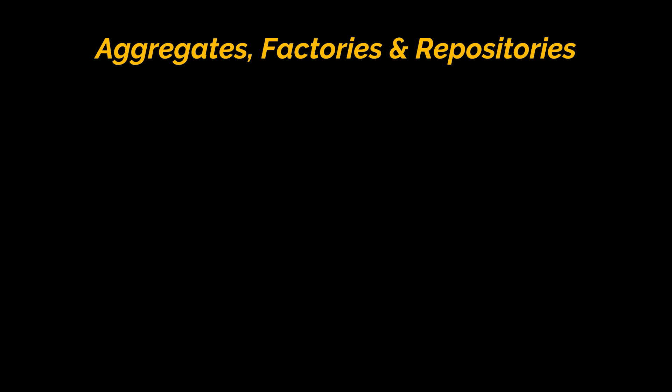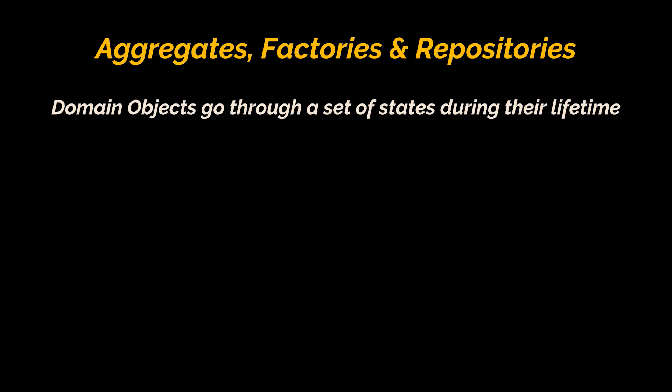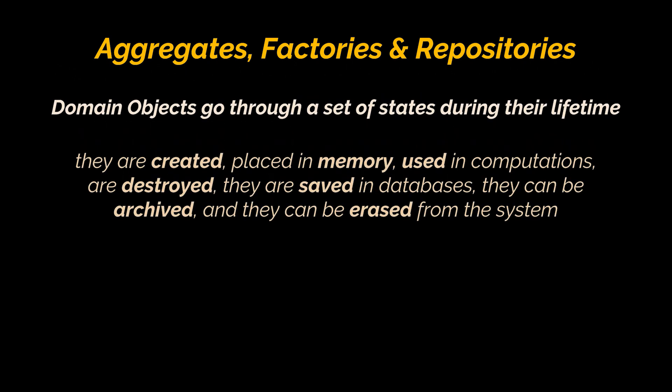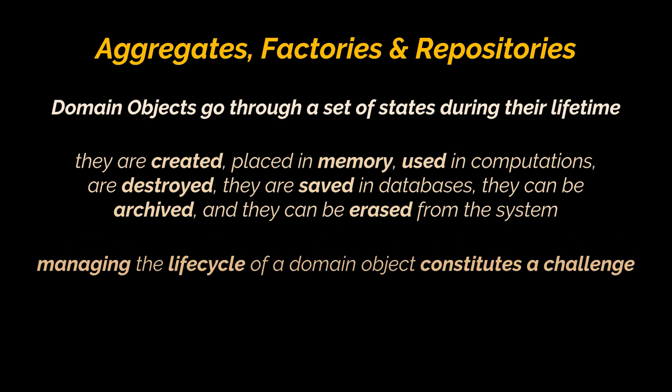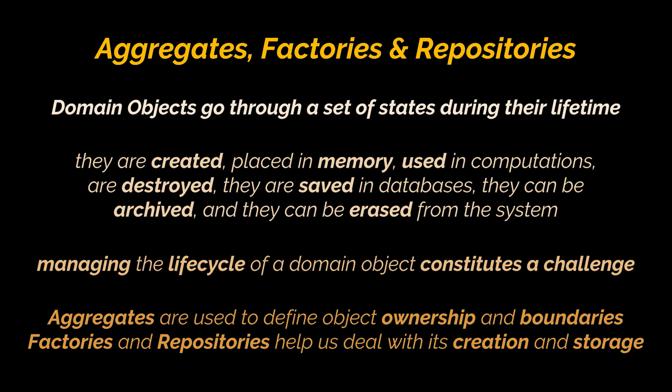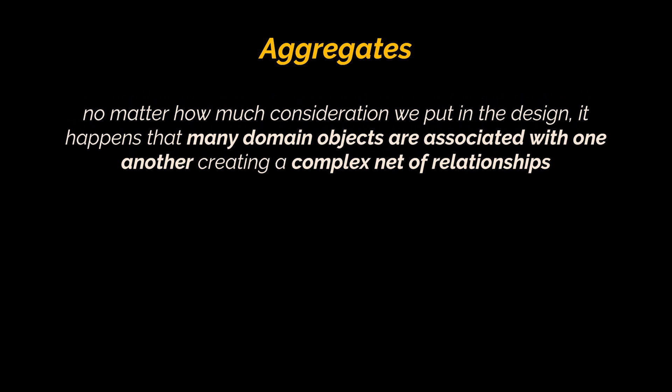After going through the main building blocks of model design, let's talk about aggregates, factories, and repositories. Domain objects go through a set of states during their lifetime — they are created, placed in memory, used in computations, and are destroyed. In some cases they are saved in permanent locations like a database, or they can be archived and at some point completely erased. Managing the lifecycle of a domain object constitutes a challenge. Aggregates define object ownership and boundaries, while factories and repositories help us deal with object creation and storage.